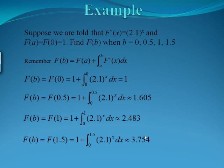Suppose that we're told that f prime of x equals 2.1 to the x and that f of a, which will be f of 0, we're going to start at 0, will be equal to 1. So now we can find various values for f of b using our rearranged fundamental theorem of calculus. We'll look at this when b equals 0, b equals 0.5, b equals 1, and b equals 1.5. Remember, f of b equals f of a plus the integral from a to b of f prime of x dx.